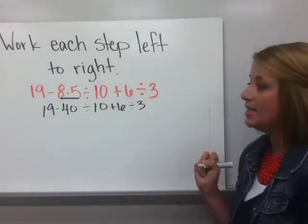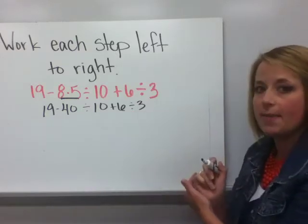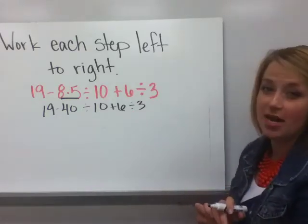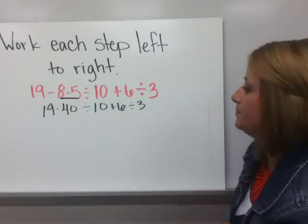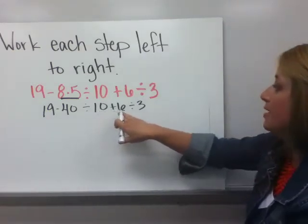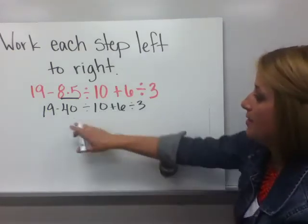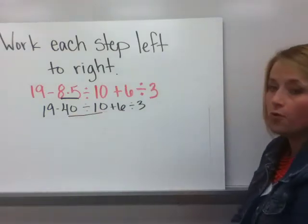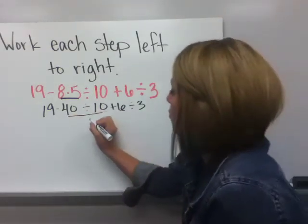It may seem tedious to only do one step at a time per line, but I promise you it really keeps things straight and you're less likely to make an error. Let's evaluate it again. I have 19 minus 40, 40 divided by 10 plus 6 divided by 3. That division is going to, this one is going to come first. 40 divided by 10, which is 4.